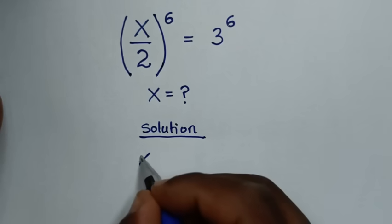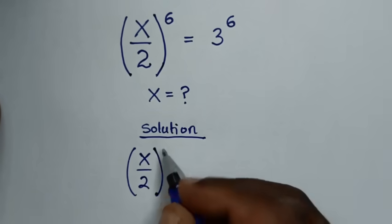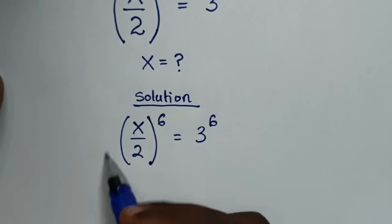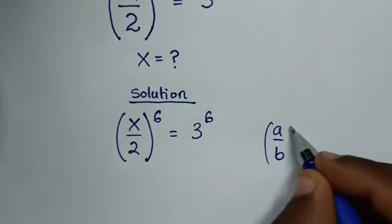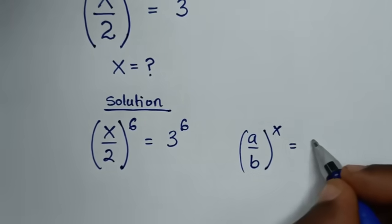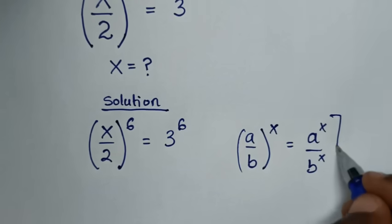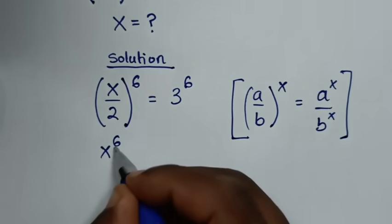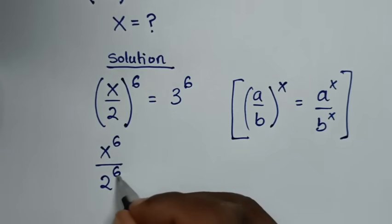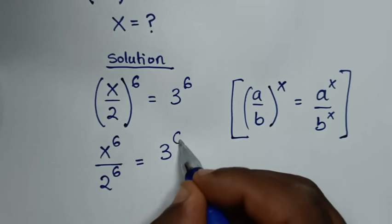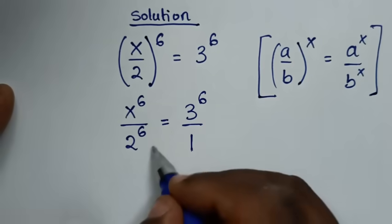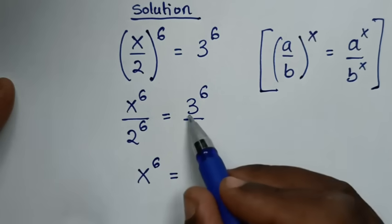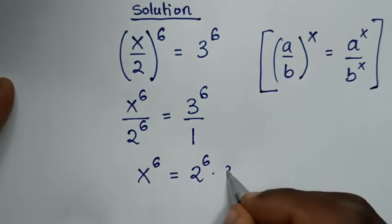From our problem, which is (x over 2) bracket to the power of 6 is equal to 3 to the power of 6. In the first step, this part is in the form of (a over b) bracket to the power of x, which is equal to a to the power of x over b to the power of x. So by applying this rule, it will be x to the power of 6 over 2 to the power of 6, is equal to 3 to the power of 6 — which is the same as over 1 — so we cross multiply. It will be x to the power of 6 is equal to 2 to the power of 6 times 3 to the power of 6.